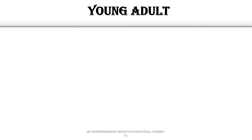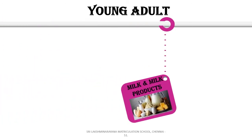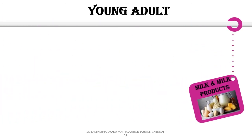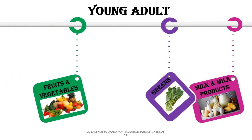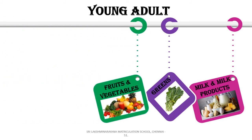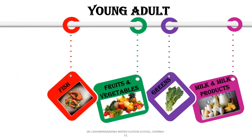Next we will see about the food items that young adults or youngsters consume. They can eat a wide variety of foods. Some examples are milk and milk products, greens, fruits and vegetables, fish, and rice.